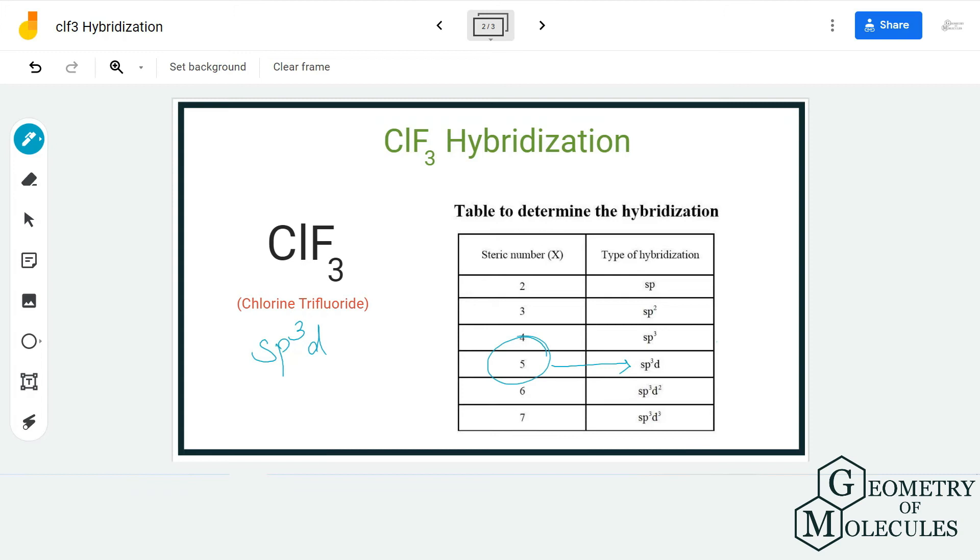That is because the chlorine atom will have five hybridized orbitals, out of which one will be an s orbital, three will be p orbitals, and one d orbital. And that is how it is determined.